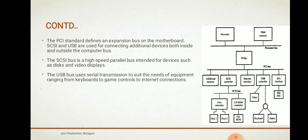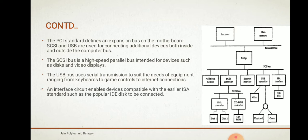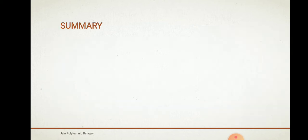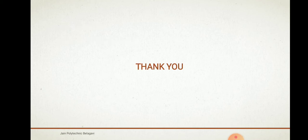SCSI bus is specially used for video and disk displays. USB uses serial transmission to suit the needs of equipment ranging from keyboards to game controllers and internet connections. An interface circuit enables devices compatible with earlier ISS standards. There is also a connection to the Ethernet, which is a local area network providing high-speed connections. In this video we have covered different standard input/output interfaces.